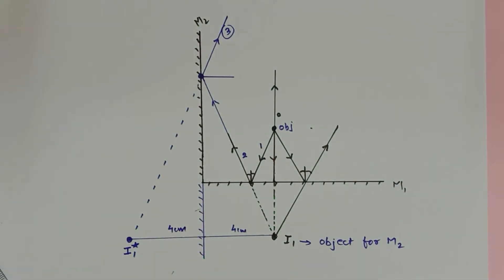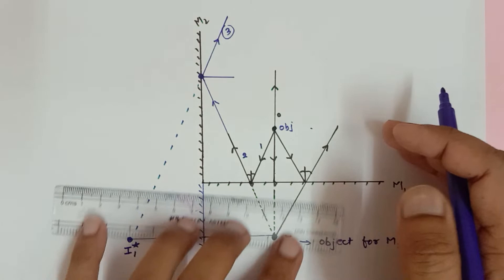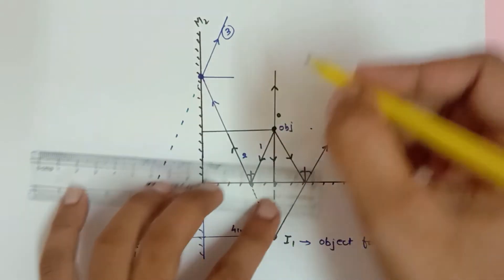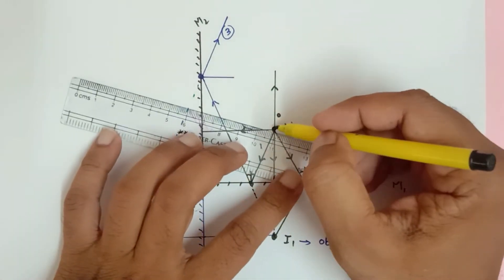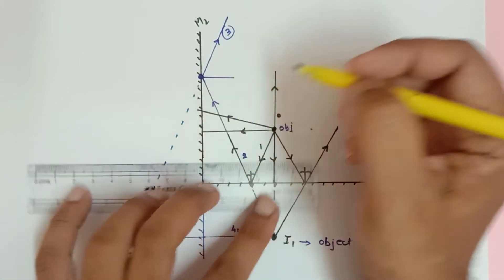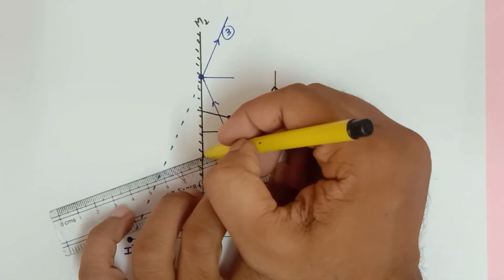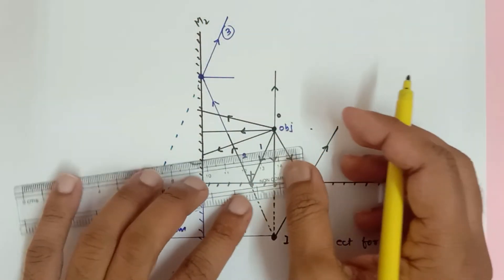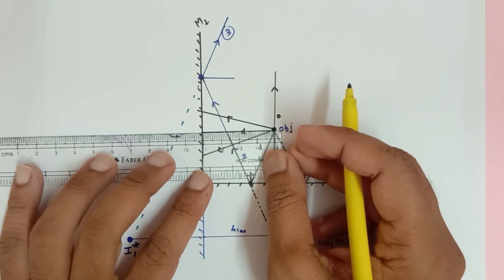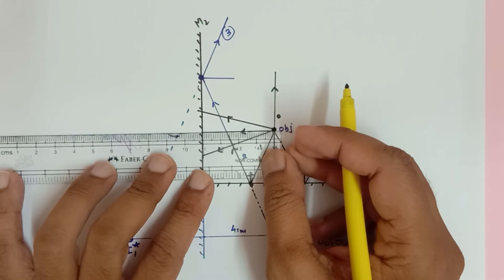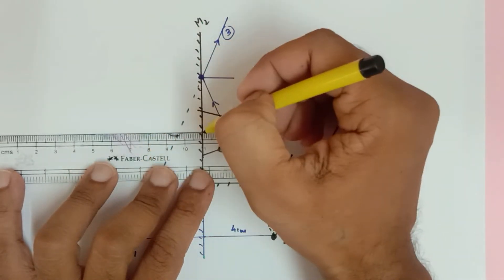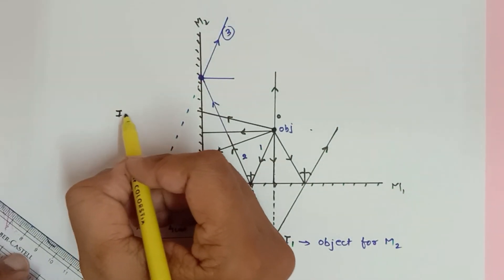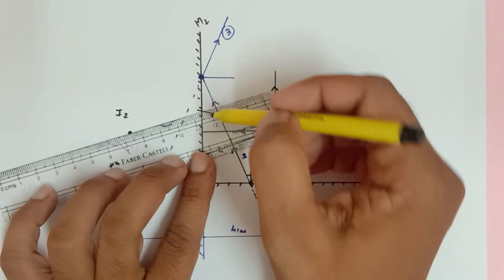In the same way, there are other rays going from the object directly — this ray, this ray, and this ray. There are three rays coming from the object directly striking mirror M2. I know that the image will be formed four centimeters behind, so counting one, two, three, four — here is image I2, and all these rays would be reflected accordingly.